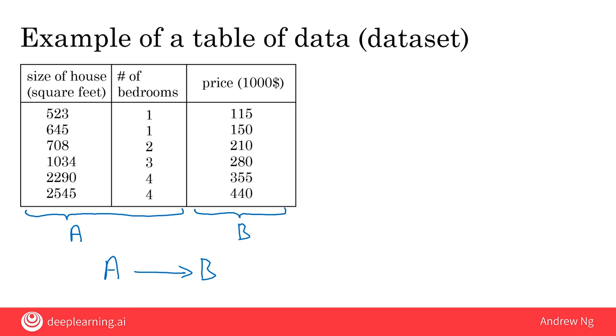Data is often unique to your business. This is an example of a dataset that a real estate agency might have if they're trying to help price houses. It's up to you to decide what is A and what is B, and how to choose these definitions to make it valuable for your business.